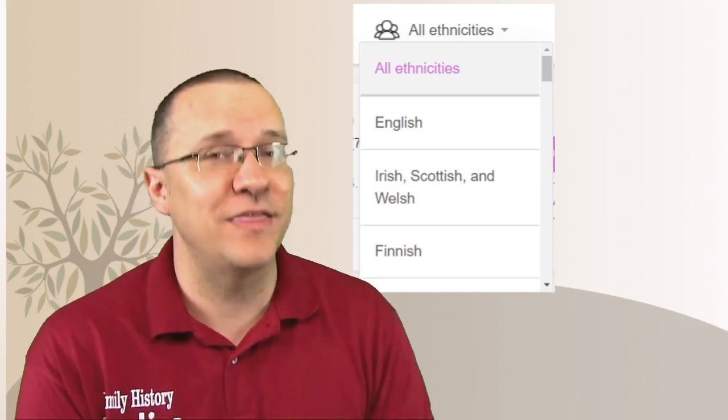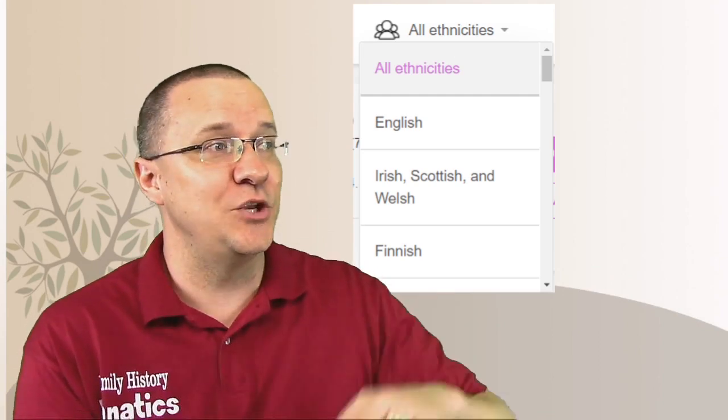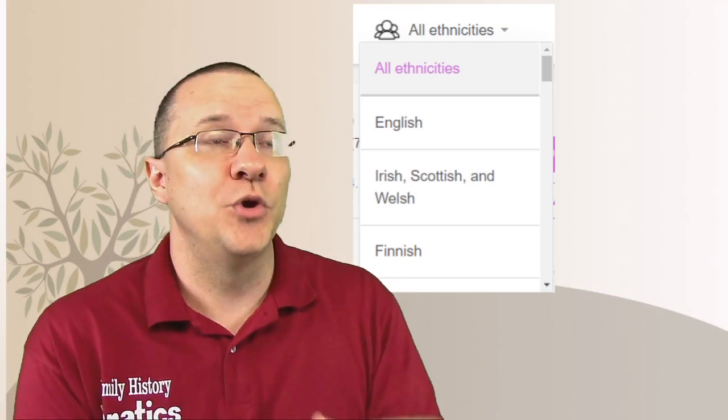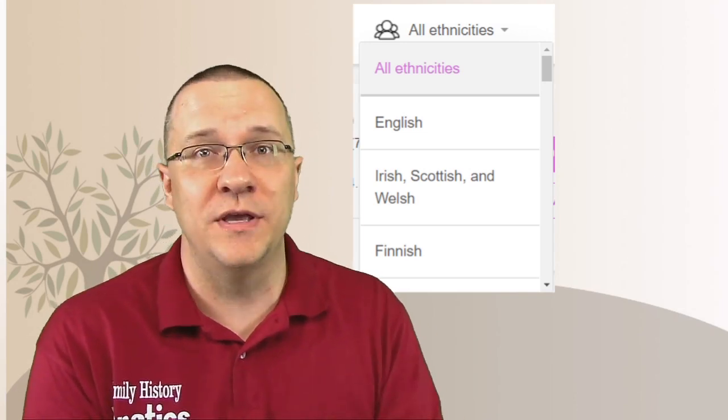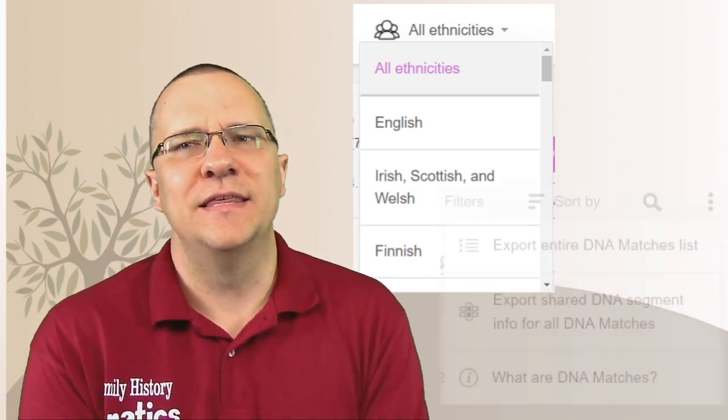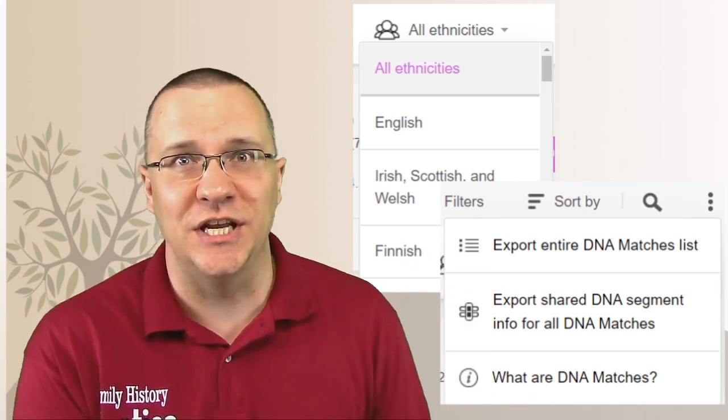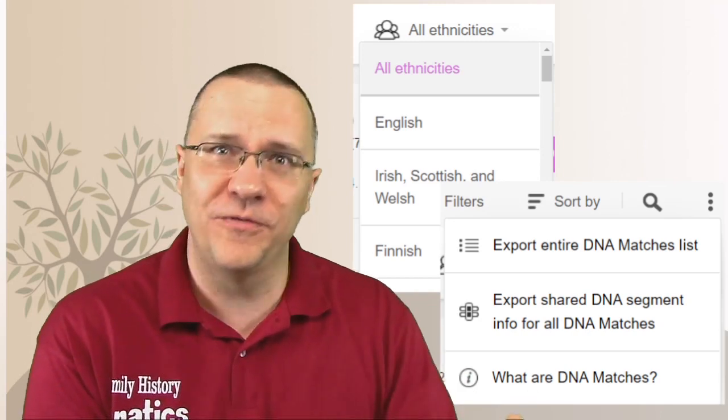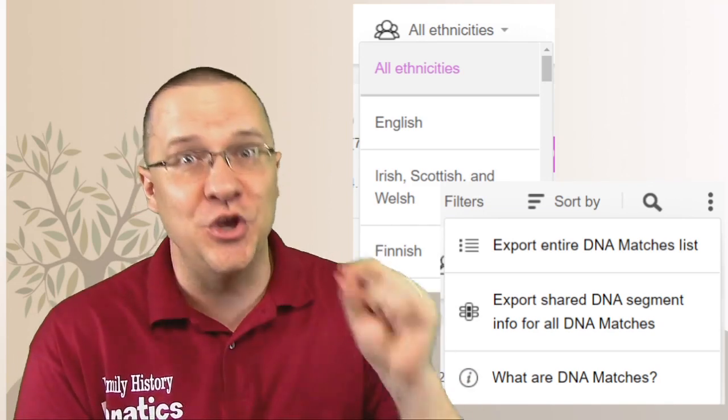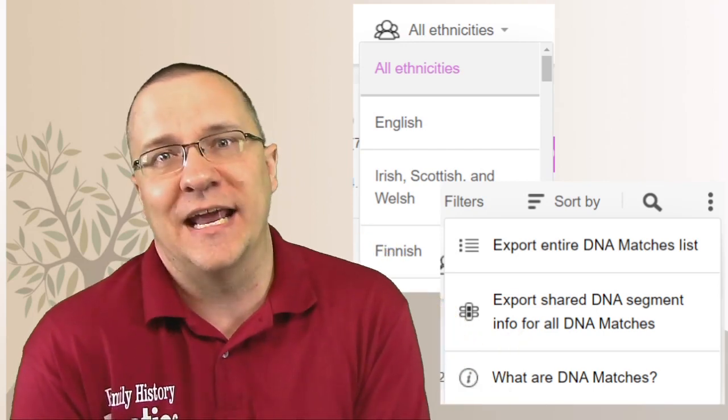Now, over on MyHeritage, one of the great things that they have is that you can actually sort by ethnicity. If you want to use your ethnicity results, let's say, for instance, that you're adopted and you have an ethnicity results that is Sub-Saharan Africa. Well, you're interested in your relatives who might also be with that same ethnicity. So you can sort on that ethnicity. The other thing that you're allowed to do is you're allowed to export this match list to a spreadsheet. You can export all this data, which is wonderful if you're like me and you're crazy and you like spreadsheets and you have different ways that you've thought of sorting things that MyHeritage hasn't thought of. So I like to do this a lot. I do it all the time.